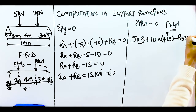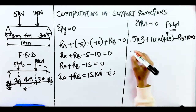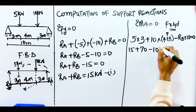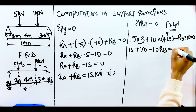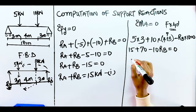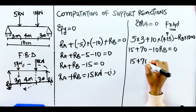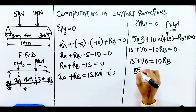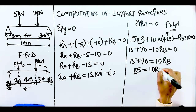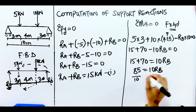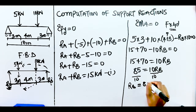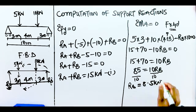Solving: 15 + 70 − 10·RB = 0, so 85 = 10·RB. Dividing both sides by 10 gives RB = 85 ÷ 10 = 8.5 kN. That is the value for RB.